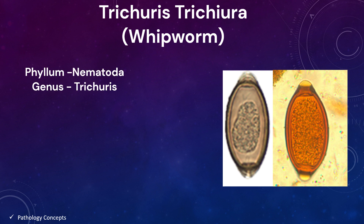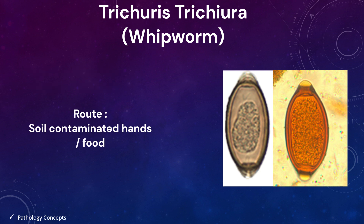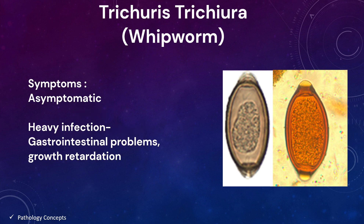Next is Trichuris trichiura, also called whipworm. The phylum is Nematoda, genus is Trichuris. The route of infection is through soil-contaminated hands or food. Patients are mostly asymptomatic, but heavy infections, especially in small children, can cause gastrointestinal symptoms such as abdominal pain, diarrhea, rectal prolapse, and possibly growth retardation.